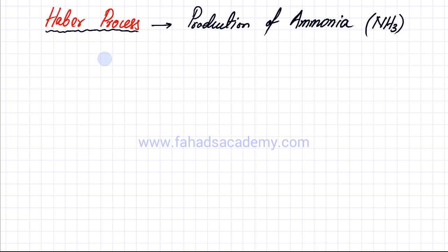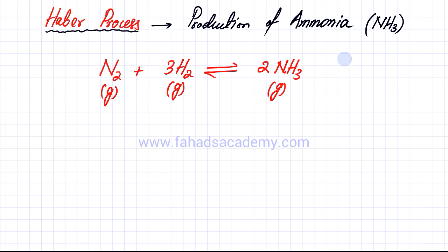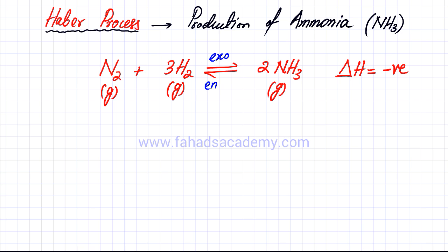The equation for the Haber process is that you're reacting nitrogen with three molecules of hydrogen, producing two molecules of NH₃, and they are all in gaseous state. The enthalpy of the forward reaction, delta H, is negative, which means that the forward reaction is exothermic, whereas the backward reaction is endothermic.